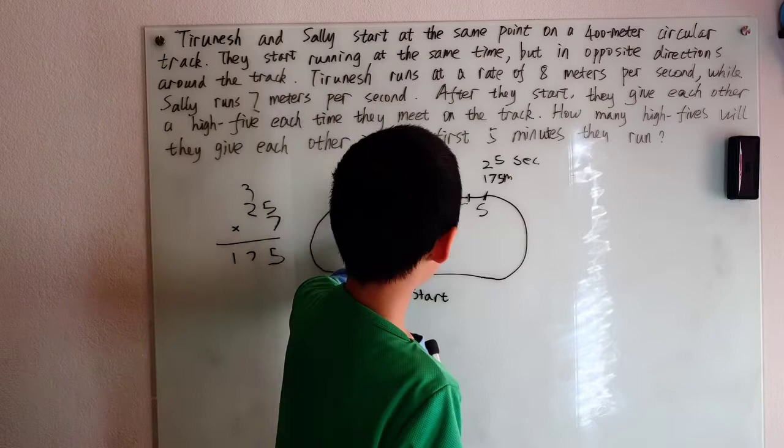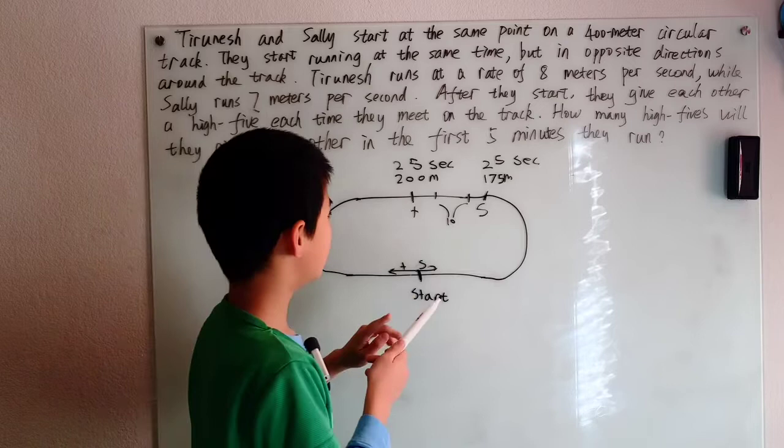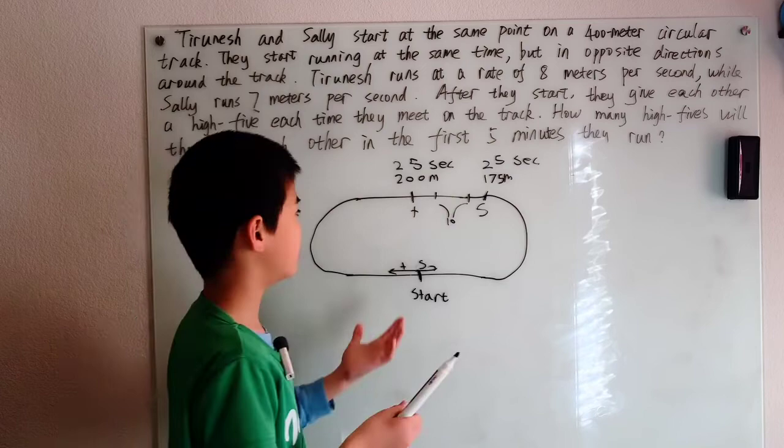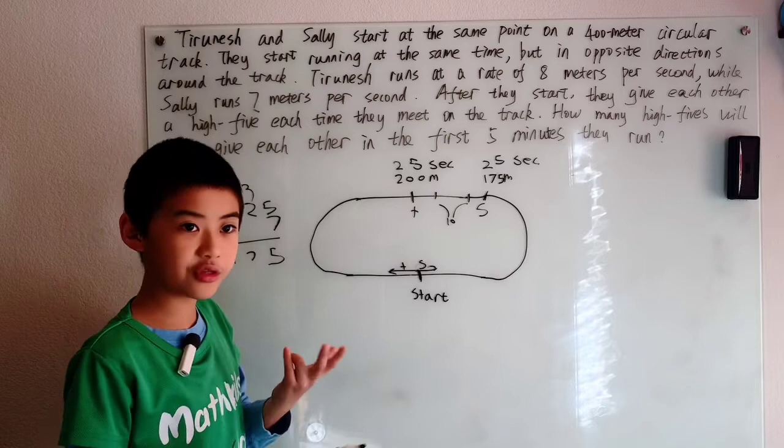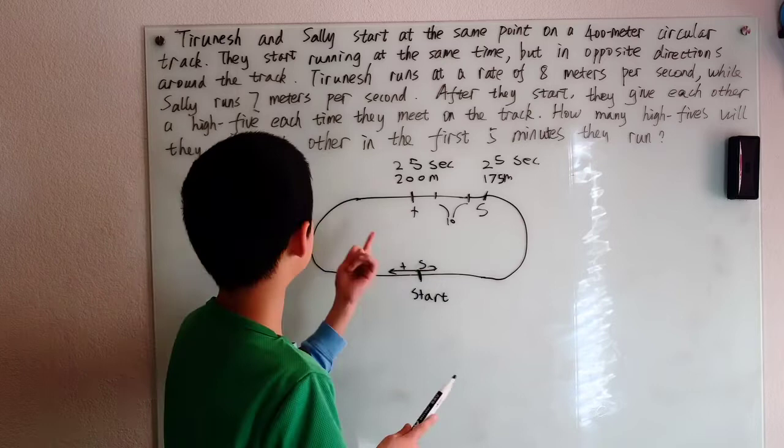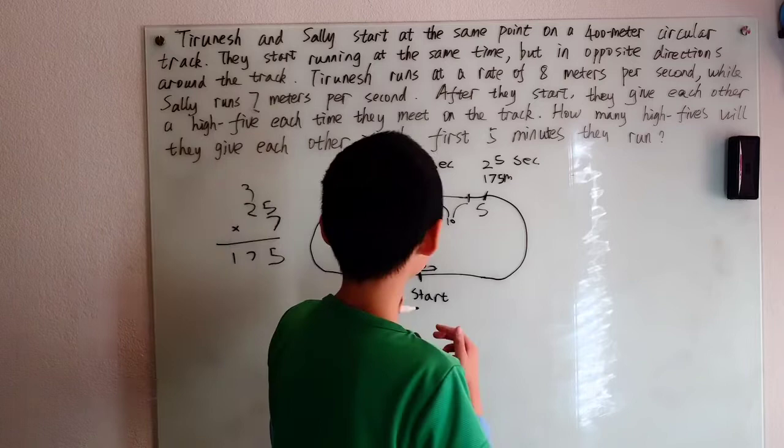Hey wait a minute. If every second they get 15 meters closer to each other, well that means in a third of a second they get 5 meters closer to each other, right? And 10 is just 2 times 5. Meaning it's 2 times a third of a second, which means it takes 2 thirds of a second to get 10 meters closer when Tranish is running at this speed and Sally is running at the other speed.